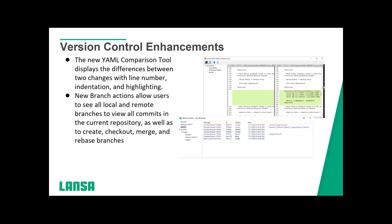One of the next things we did — we did a lot of version control enhancements this time. We have a YAML comparison tool that displays the differences between any two changes, with line numbers, indentation, and highlighting. We also added some new branch actions that allow users to see all the local and remote branches and view all the commits in the current repository, as well as being able to create, check out, merge, and rebase branches. This is really all to allow more control from within the IDE, so that you're not having to switch in and out and move around into different places.